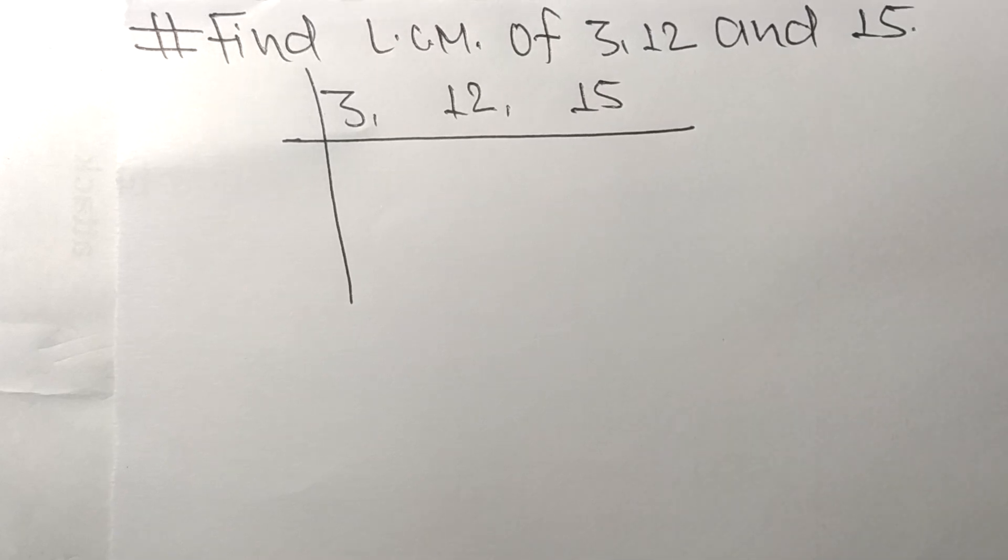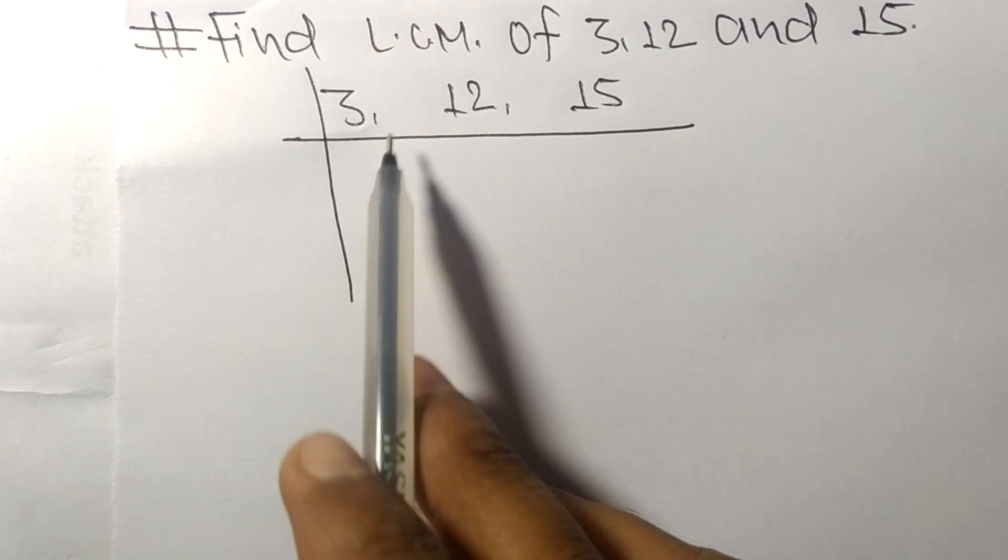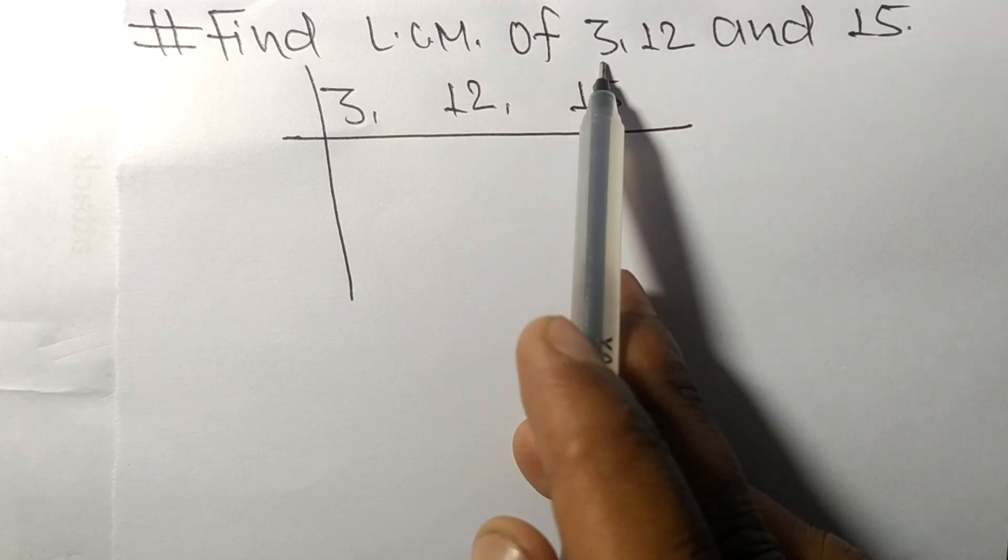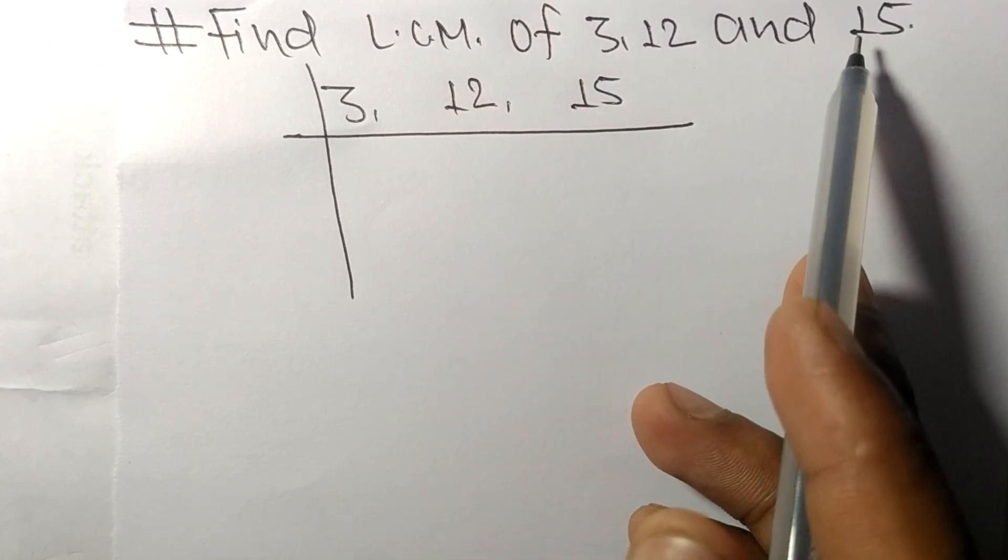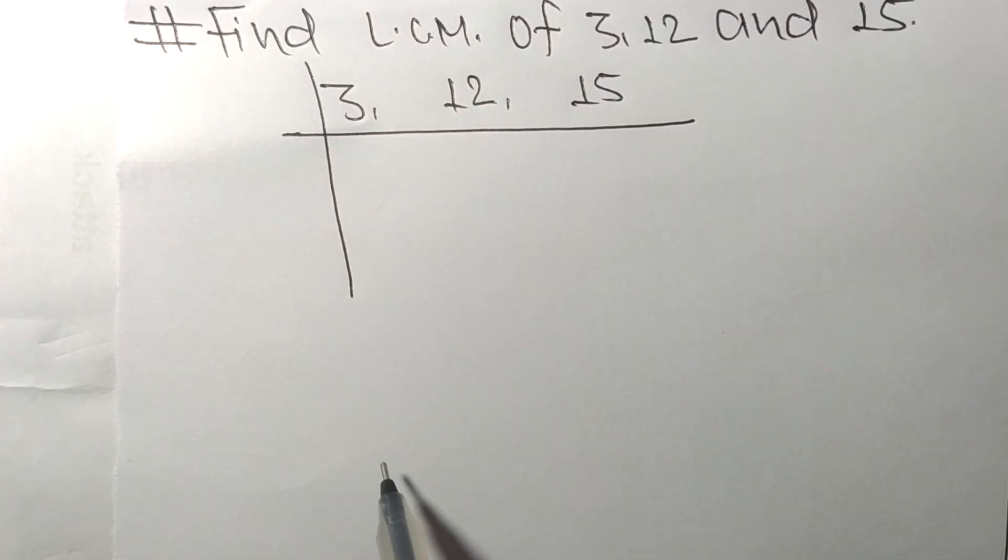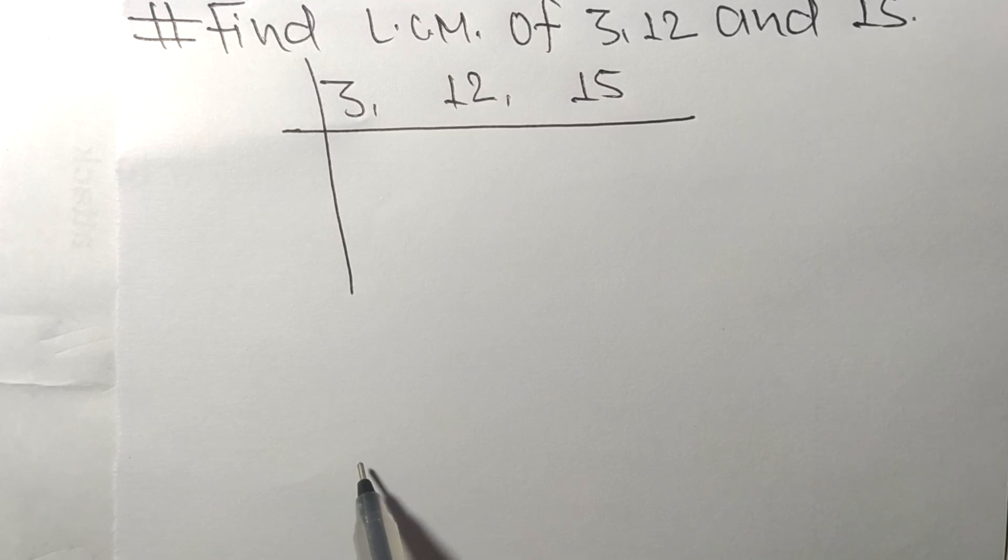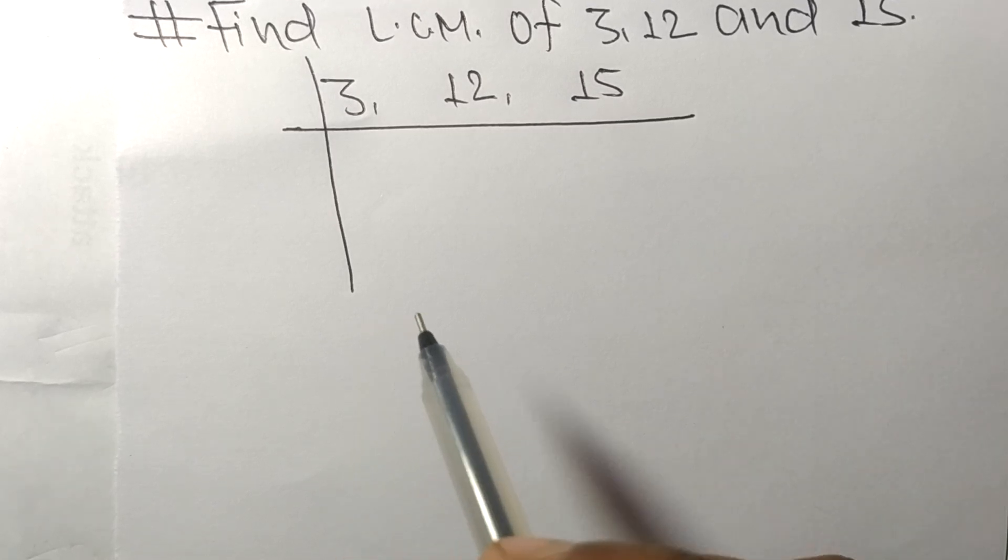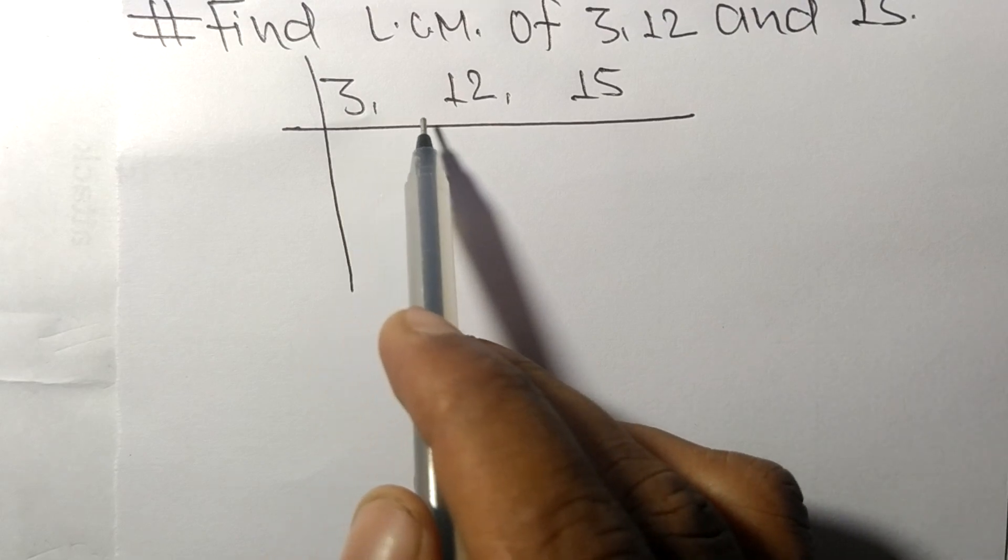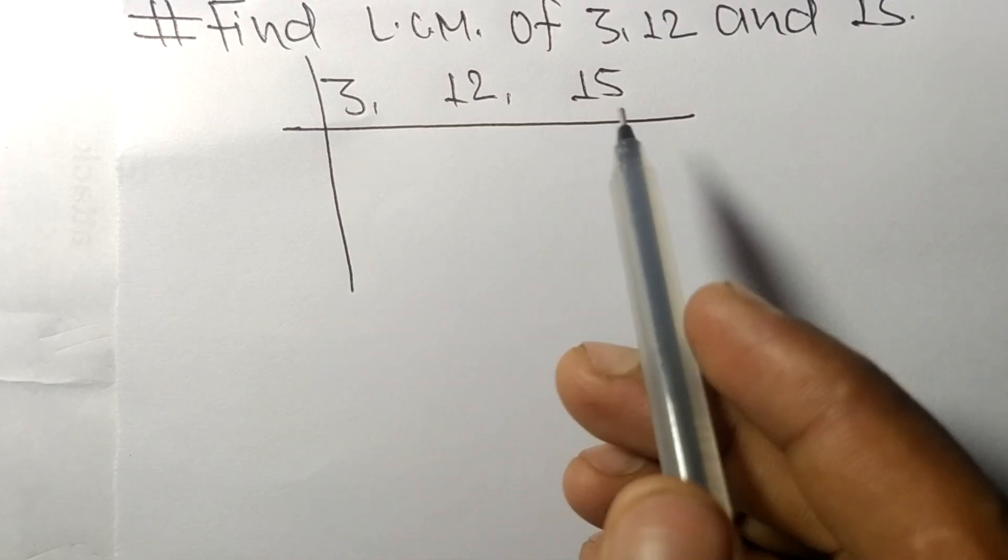Today in this video we shall learn to find the LCM of 3, 12, and 15. To find LCM, we have to choose the lowest number that can exactly divide at least any two of these numbers.